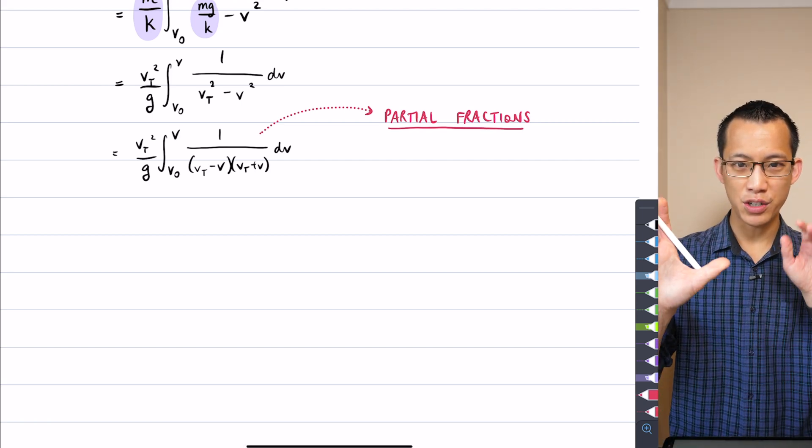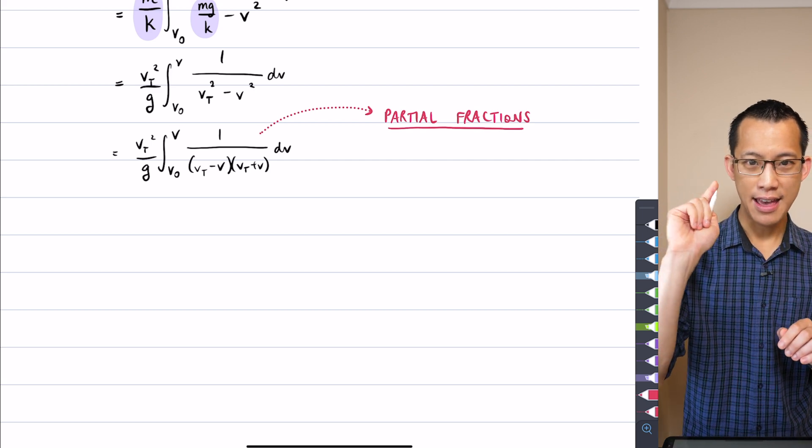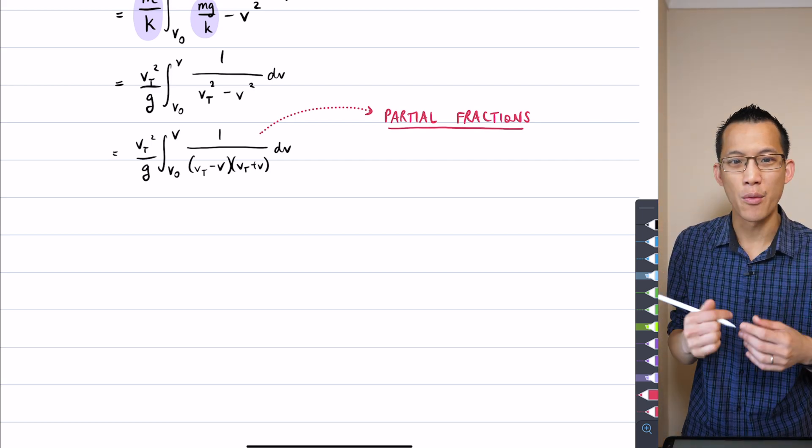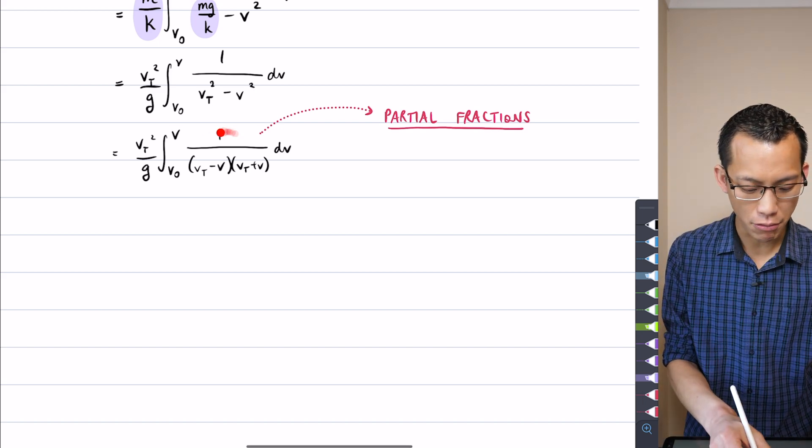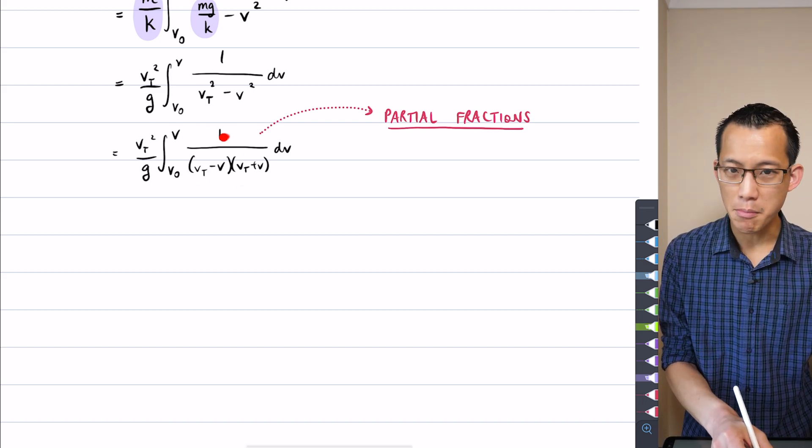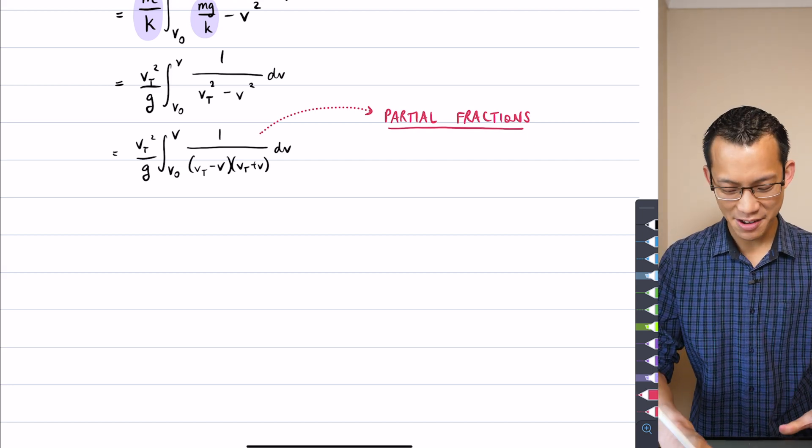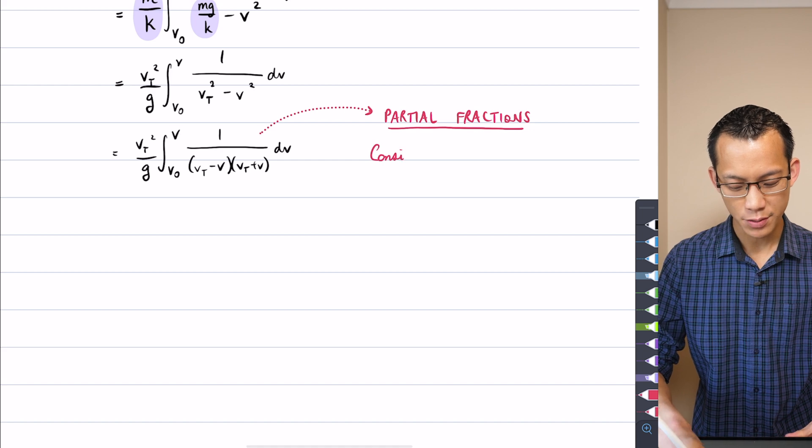Rather than designate, okay, here's my two separate fractions and call it like A is the numerator for one, B is the numerator for another - you can do it that way if you like - but because of how simple this term is, like there's nothing much happening on that numerator, I'm gonna do it a slightly sneaky way, but it actually works out very simple for us.